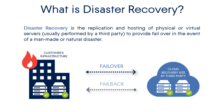In turn, failback is the process of restoring operations to the primary physical machine after they've been shifted to a secondary machine during a failover. Disaster recovery includes the replication and hosting of virtual or physical servers to provide failover in the event of a man-made or natural catastrophe.